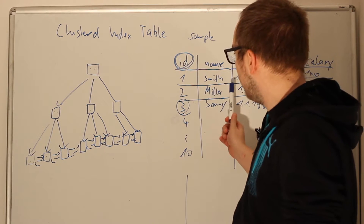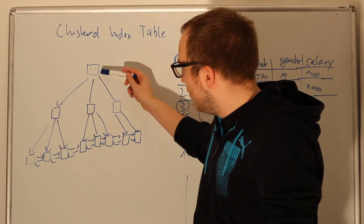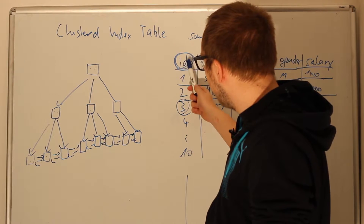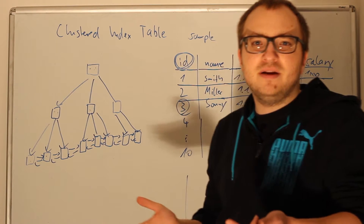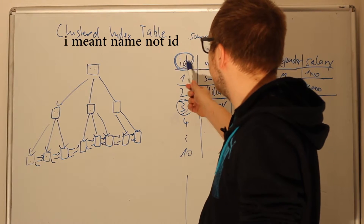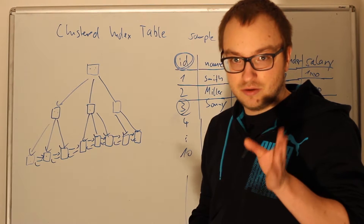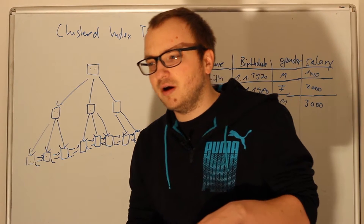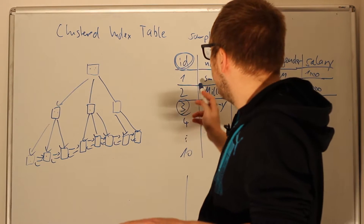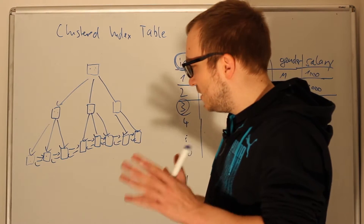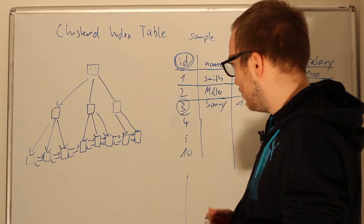But what if you want to find all the Millers, all the Sunnys, or all the Smiths? We have no B-tree for this. We only have the ID key in those nodes, so we cannot traverse this tree based on names. We could build another tree based on names, or lay a clustered index on names — but that's a very bad idea. A clustered index on character types, especially non-unique ones, is not a good idea at all. We want to keep our efficient B-tree intact.